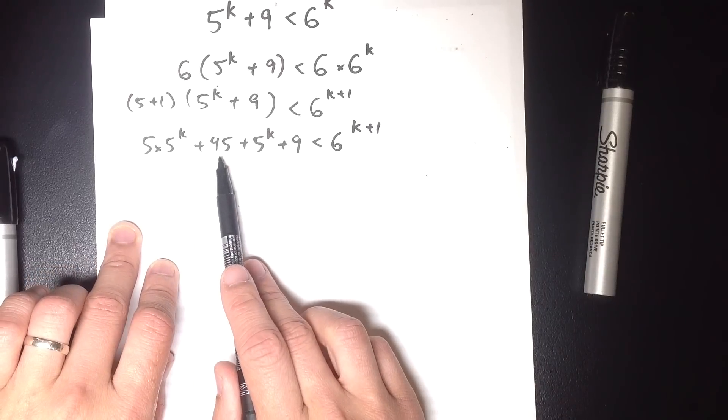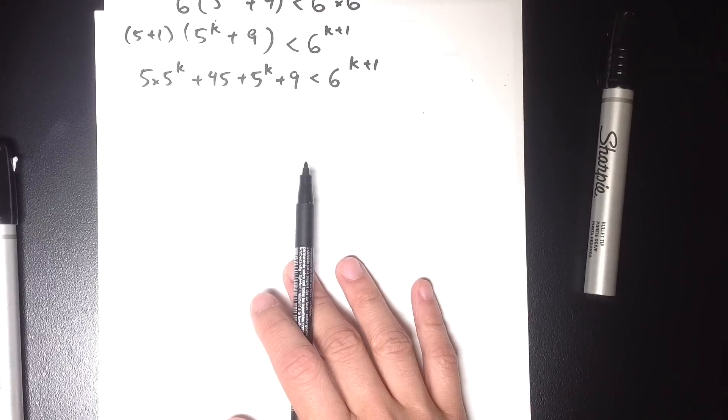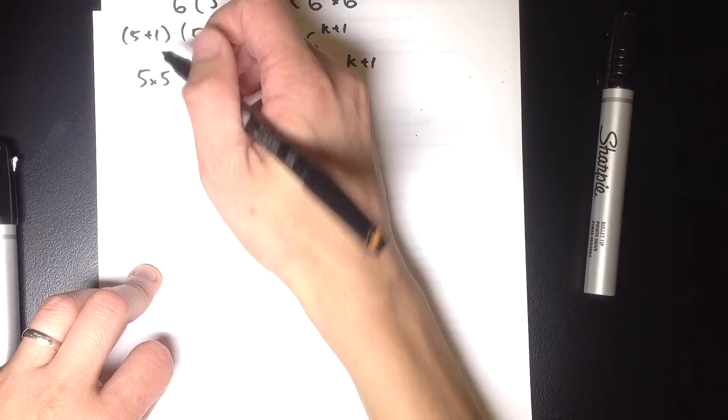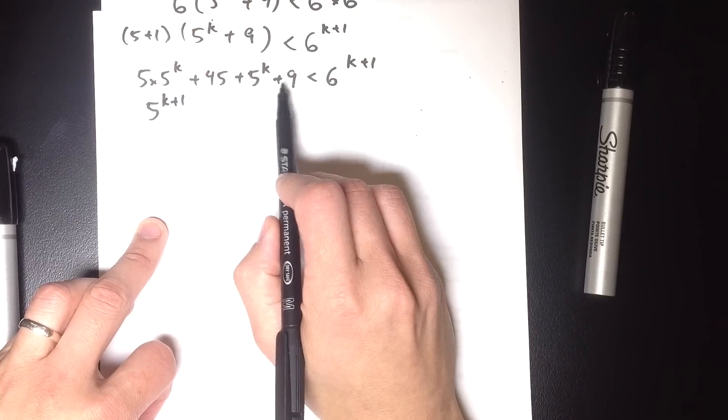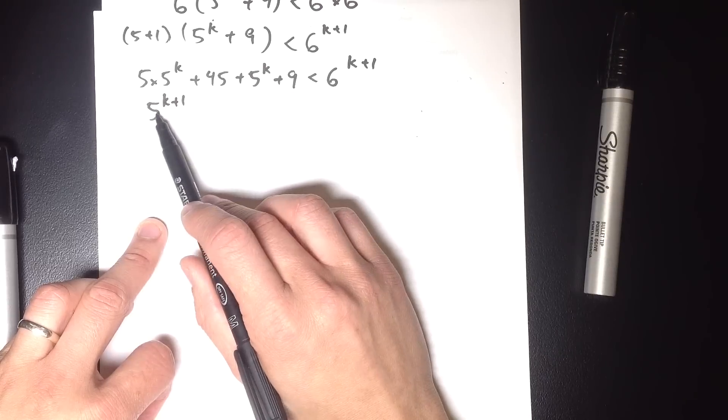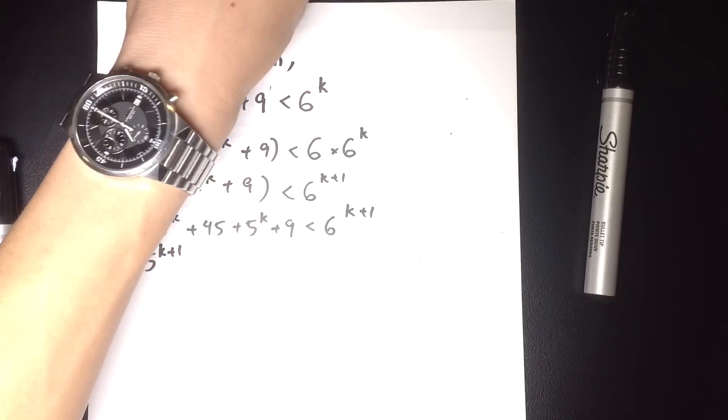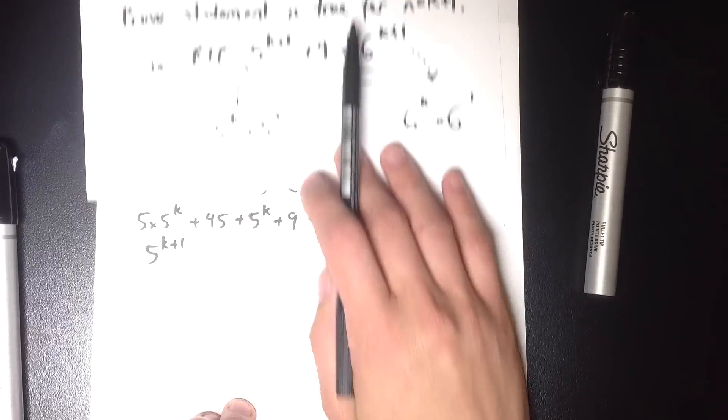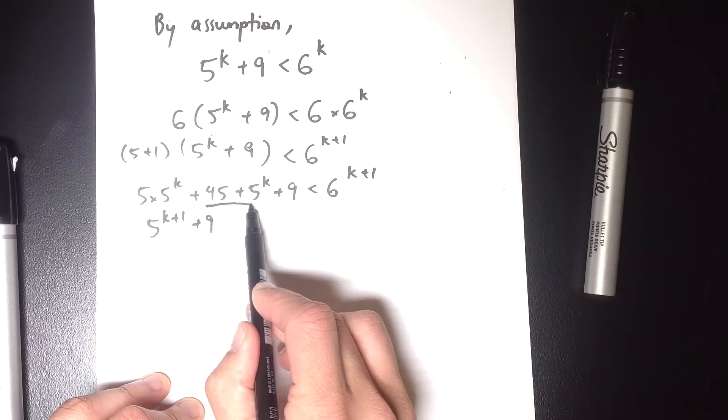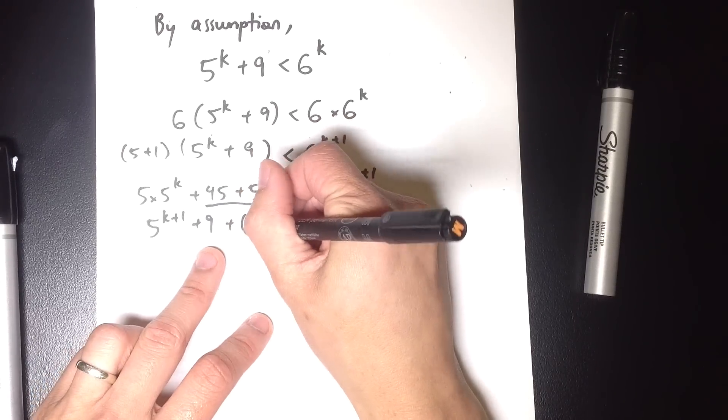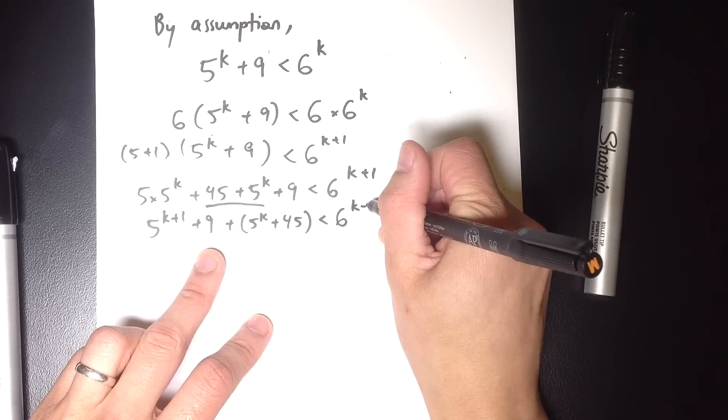Now, ordinarily I'd put this 45 and this 9 together. But for now, I'm going to leave them and you'll see why later. Now, this 5 times 5 to the k, there is the 5 to the k plus 1 that I was after. I'm going to swap these two numbers around because I want the 5 to the k plus 1 and the 9 to be together, because in what I'm required to prove, that's what I've got. So I'm going to have 5 to the k plus 1 plus 9, and then I have these other two terms, these extra terms. So just to show that they're a bit extra, I'm going to put them in brackets here. 6 to the k plus 1.